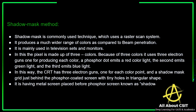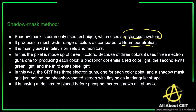The shadow mask is a commonly used technique compared to beam penetration. It uses the raster scan system, whereas beam penetration uses the random scan system. It produces a much wider range of colors compared to beam penetration, which produces only four colors. Shadow mask is mainly used in television sets and monitors because those displays require a combination of many colors.